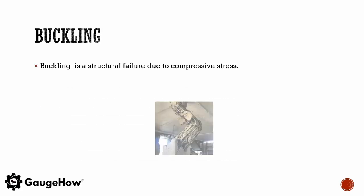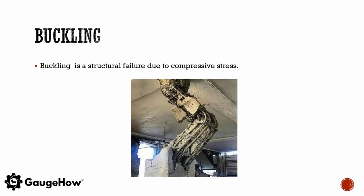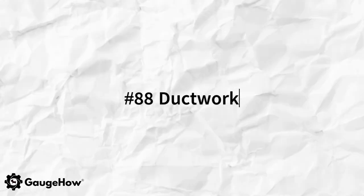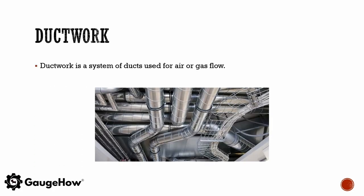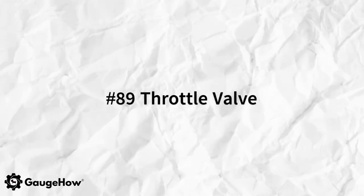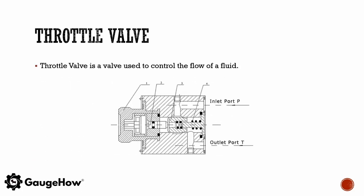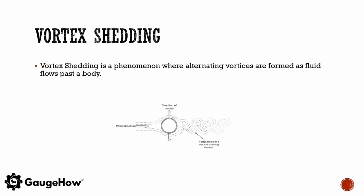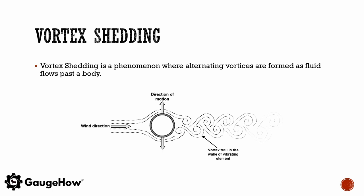Buckling is a structural failure due to compressive stress. Ductwork is a system of ducts used for air or gas flow. A throttle valve is a valve used to control the flow of fluid. Vortex shedding is a phenomenon where alternating vortices are formed as fluid flows past a body.